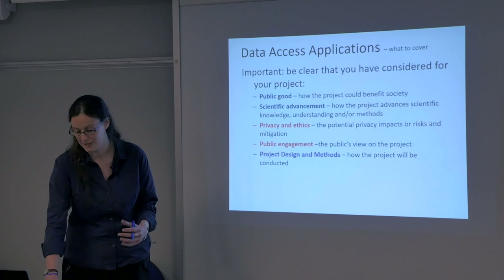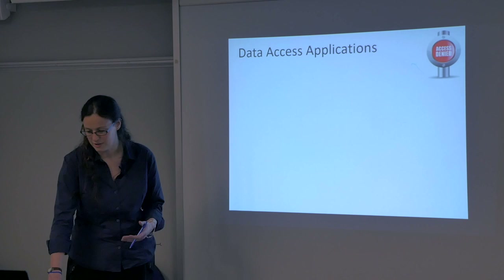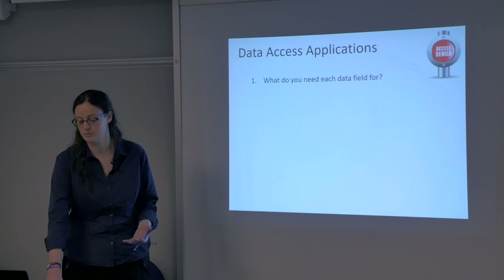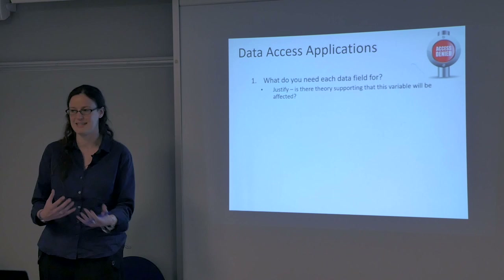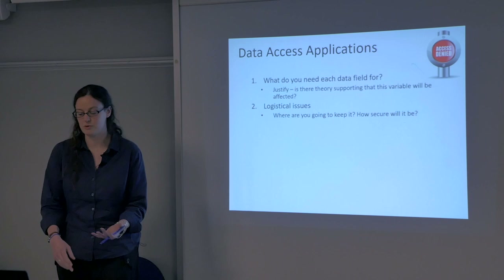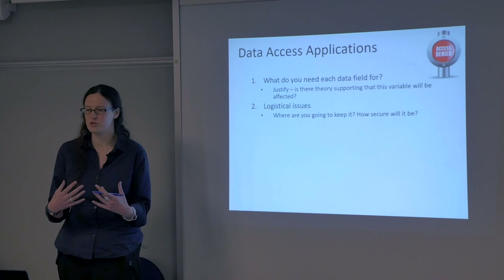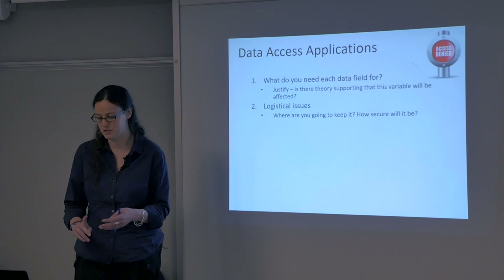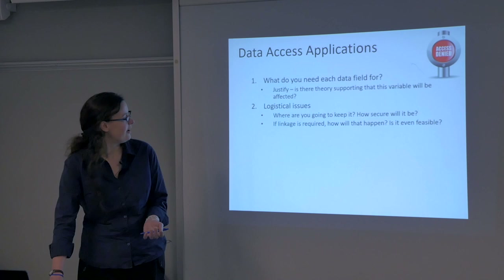On the more practical side, you have to be clear about what you actually need each data field for. You need to provide a list of variables — don't just include something because you think it might be interesting. For example, sensitive personal data like ethnicity needs to be justified. There are also logistical issues: where are you going to keep the data, how secure will it be? There's a culture of caution in data control, so reassure them — say it will be in a secure location, only specific people can access it, you'll keep it for a specific length of time, and if you're going to use a safe haven, that would be great.